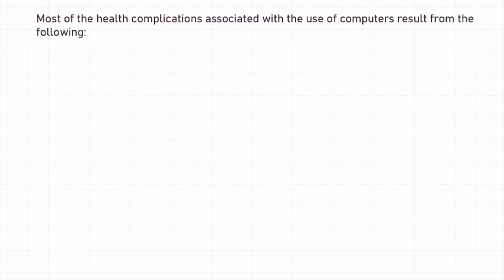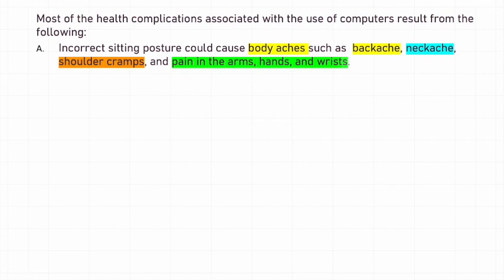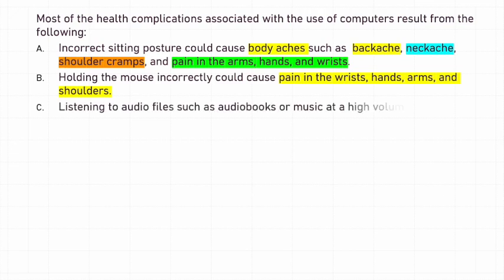Most of the health complications associated with the use of computers result from the following: incorrect sitting posture could cause body aches such as backache, neck ache, shoulder cramps, and pain in the arms, hands and wrists. Holding the mouse incorrectly could cause pain in the wrists, hands, arms and shoulders.